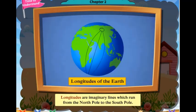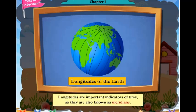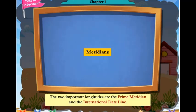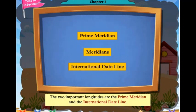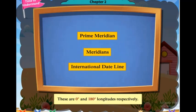Longitudes are imaginary lines which run from the north pole to the south pole. Longitudes are important indicators of time, so they are also known as meridians. The two important longitudes are the prime meridian and the international dateline, which are 0 degrees and 180 degrees longitudes respectively.